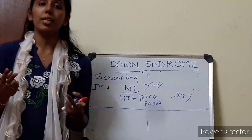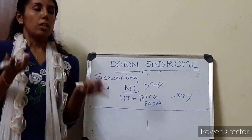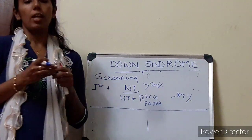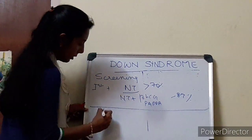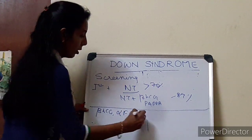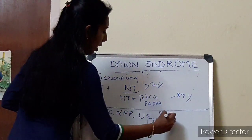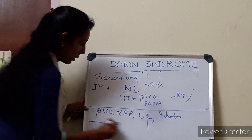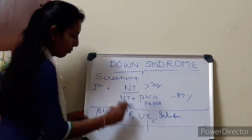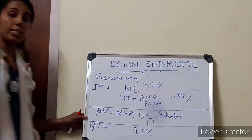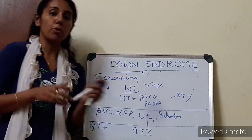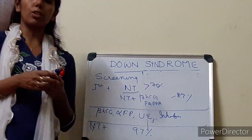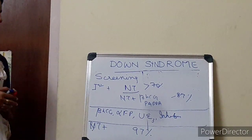In the second trimester, we have two tests: one is a quadruple test and one is a triple test. The triple test has a detection rate of around 70%, whereas the quadruple test has a detection rate of around 80%. In the quadruple test we look at beta-HCG, alpha-fetoprotein, unconjugated estriol, and inhibin A. If we can combine the first trimester scan with the biochemical profile, we then have a detection rate of around 97% — this is what is called the integrated scan, which is more commonly used nowadays. Other screening options include amniocentesis and chorionic villus sampling, where we can analyze the DNA.